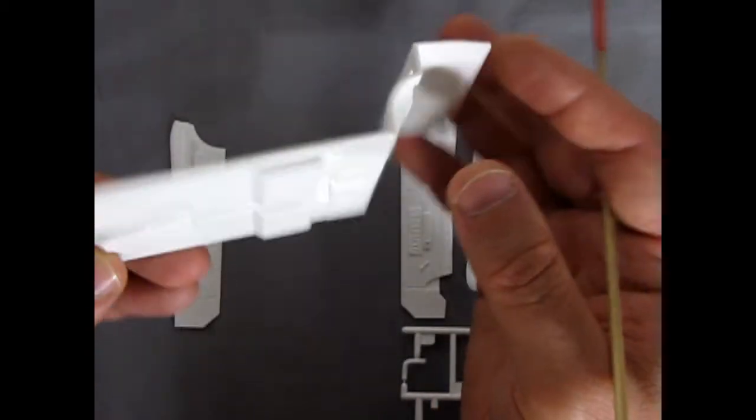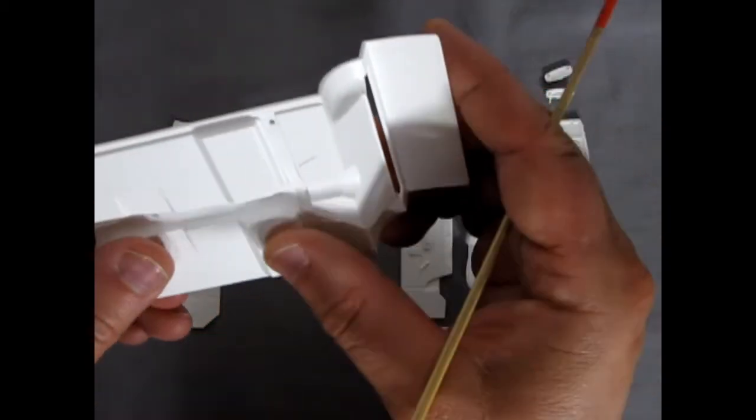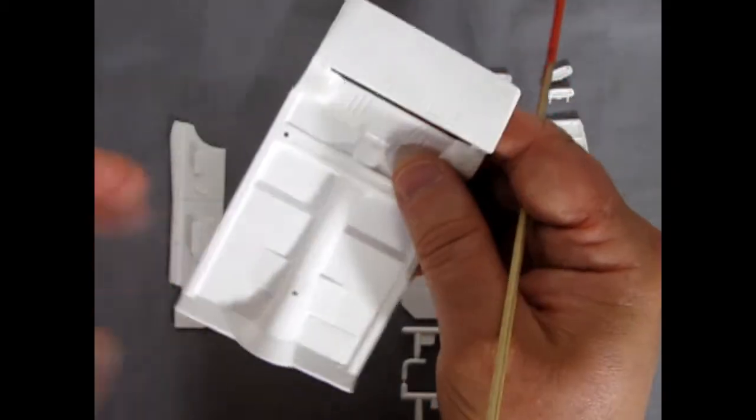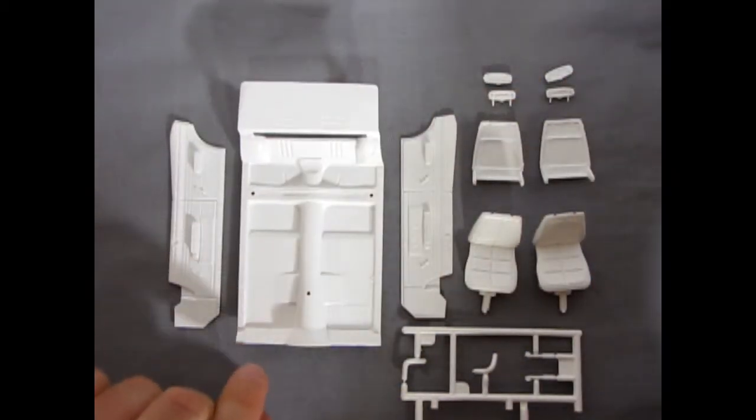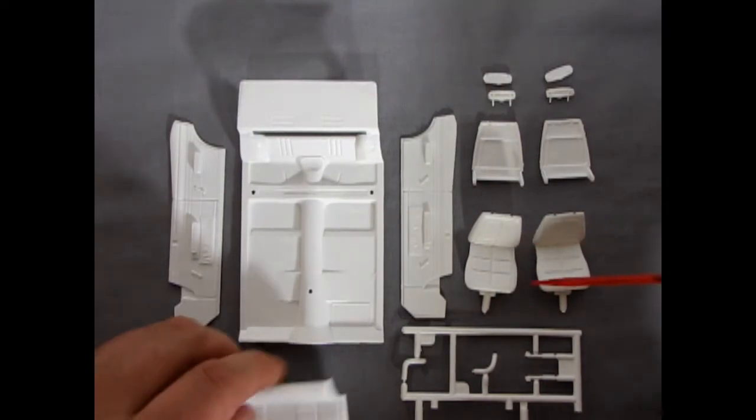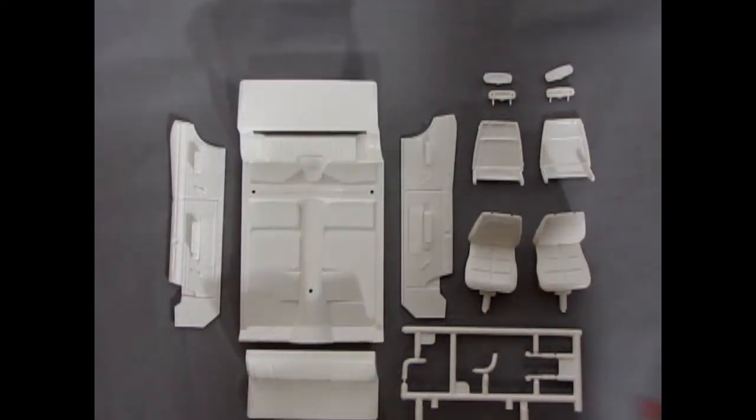Looking at the floor pan, the chassis floor pan is really nice. Underneath, not very much detail, but again, that's okay because that's taken up with the chassis pan. And basically, that's our interior in a nutshell.